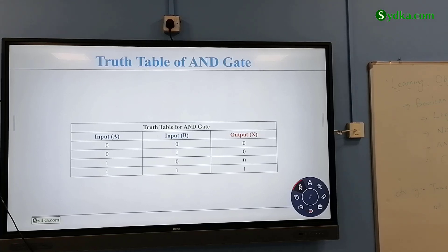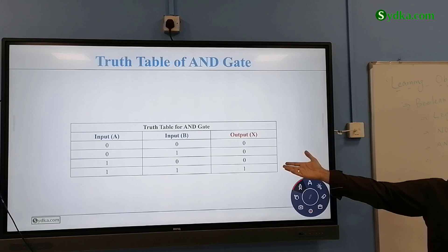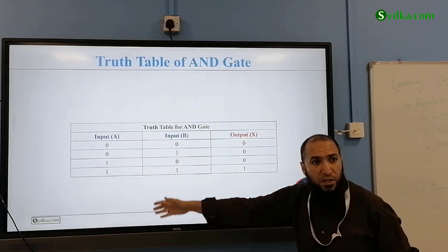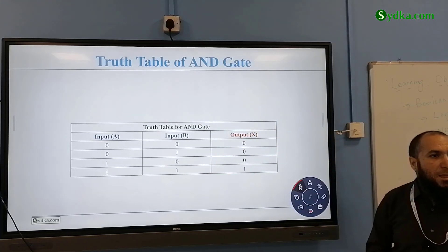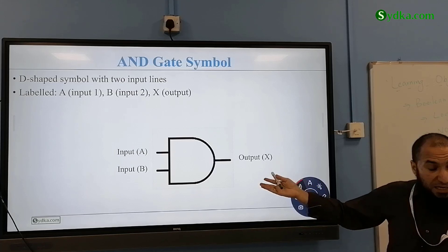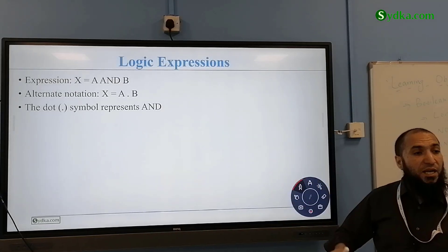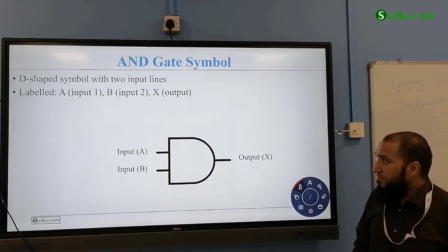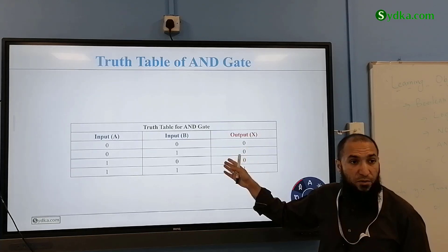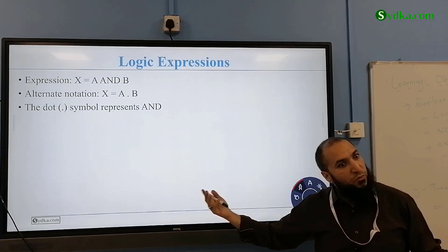In the exam they can ask you to make a truth table for AND gate. The question will be draw a truth table for AND gate. You will have input A, input B, and output. They can ask you to draw a symbol as well and can ask you to write the expression as well. They might give you a circuit and you have to draw that into a truth table, or they can give you a truth table and ask you to convert that into a diagram, or they can give you expressions and convert them.